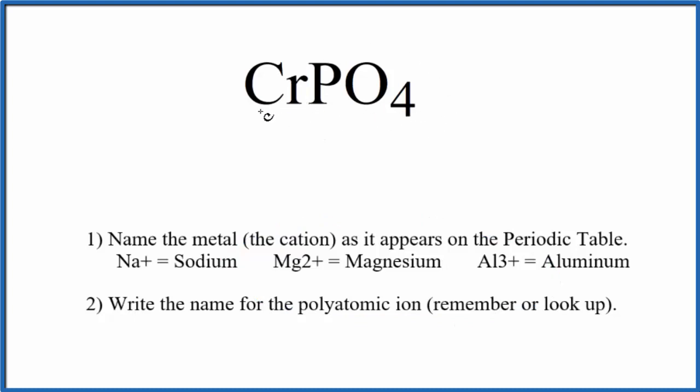So first, let's write the name of the Cr, the chromium, just as it appears on the periodic table. Next, we're just going to write the name for the polyatomic ion, the phosphate ion, PO₄, one you really should remember.